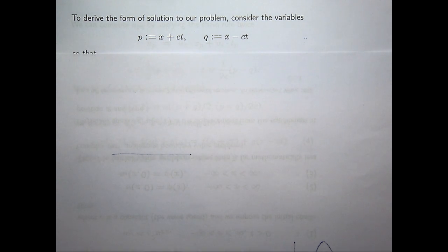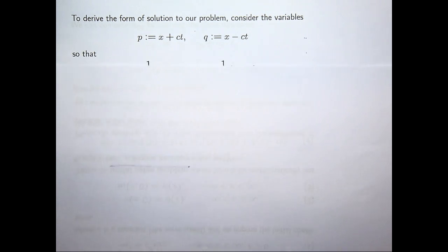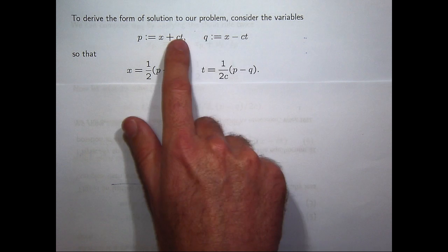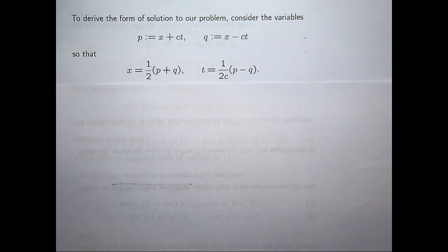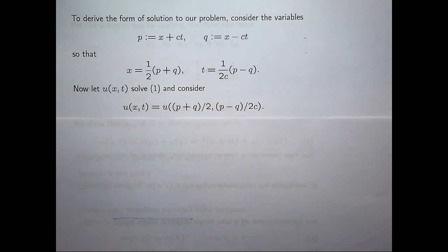So, let's have a go and see if we can derive the solution to this, subject to these initial conditions. Essentially what we do is we make a change of variables, and we break the wave equation down to a simple differential equation. So let's make a change of variables, p and q, defined in this way, and if I rearrange these equations to make x and t the subjects, then I can come up with the following relationships between x and p and q, and t and p and q.